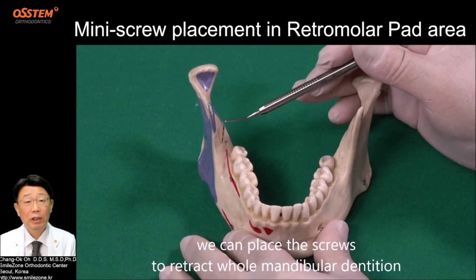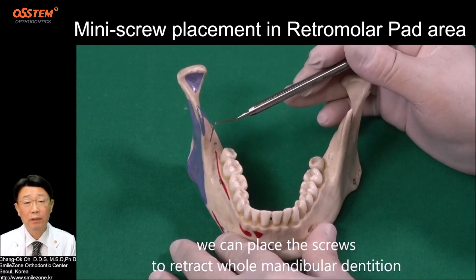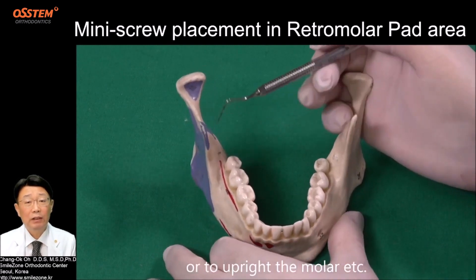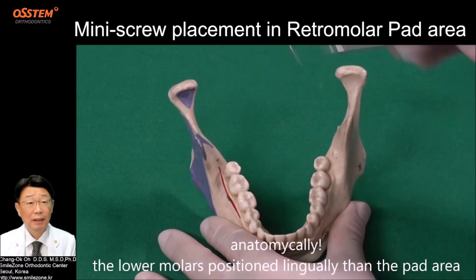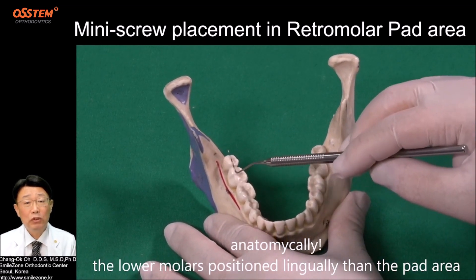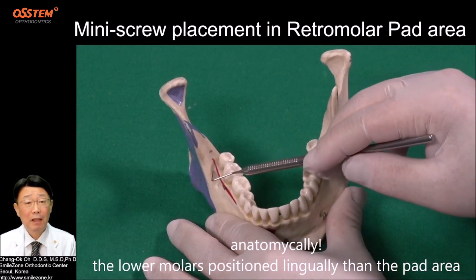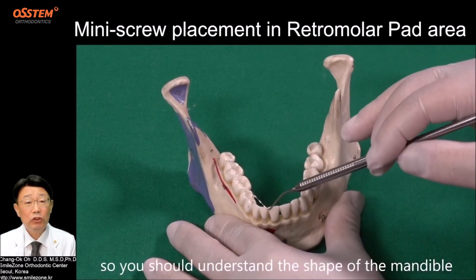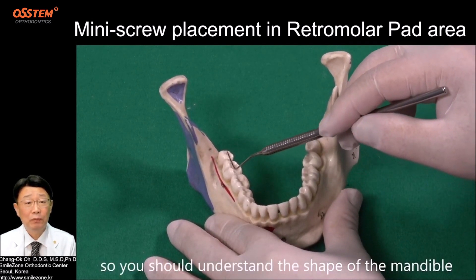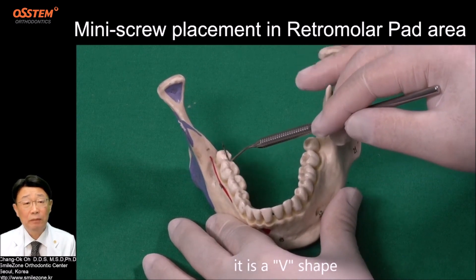We can place the screws to retract the whole mandibular dentition or to upright the molar. Anatomically, the lower molar is positioned more lingually than the pad area, so you should understand the shape of the mandible — it is V-shaped.